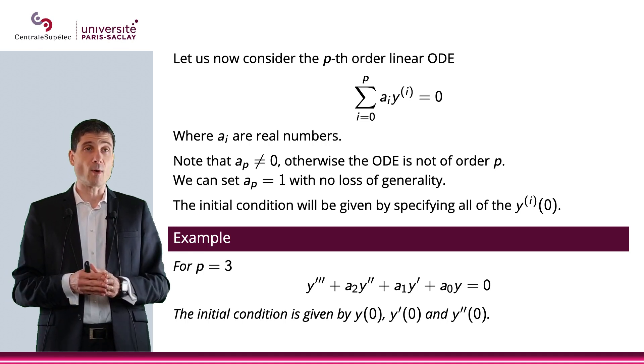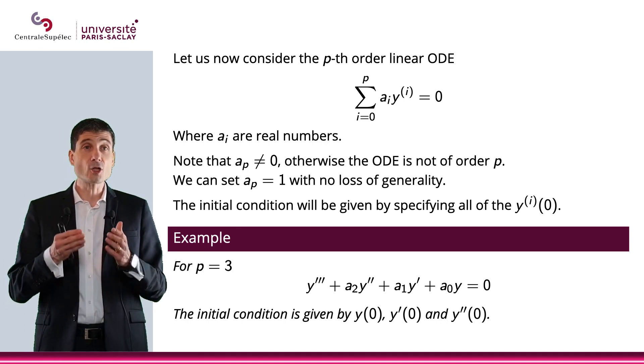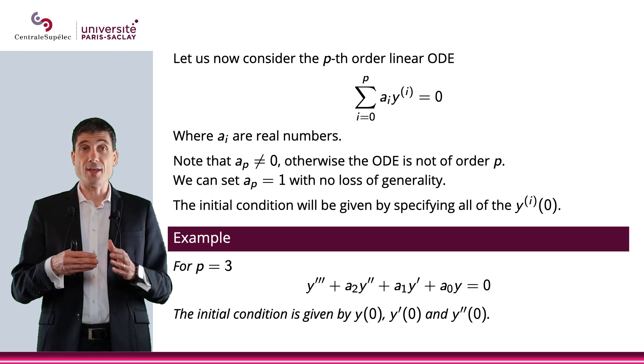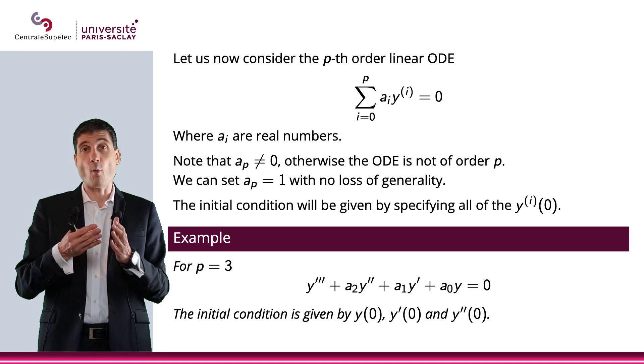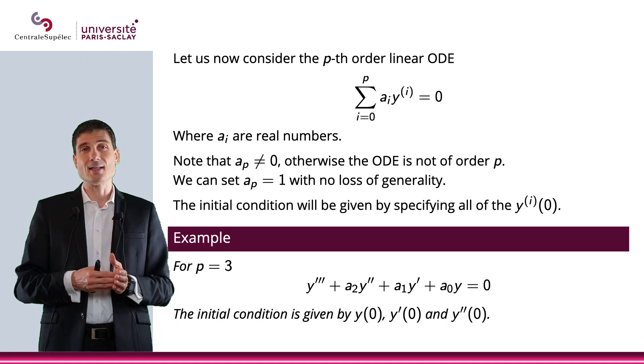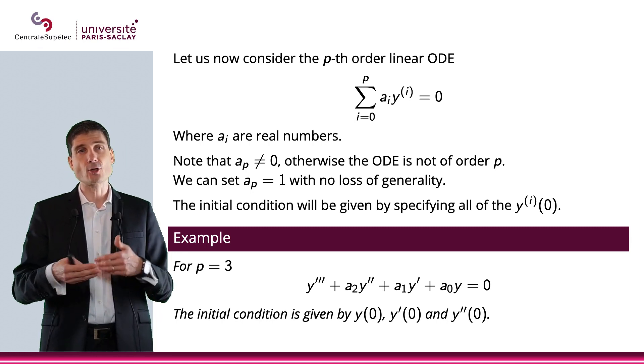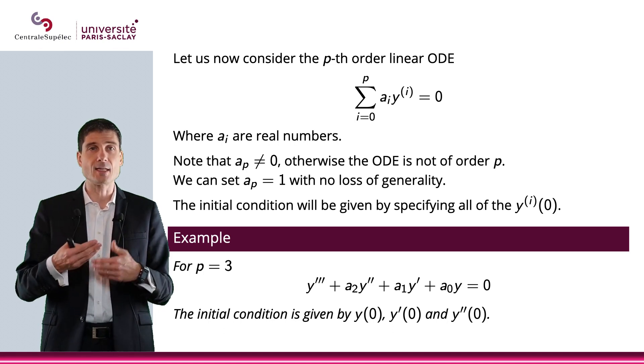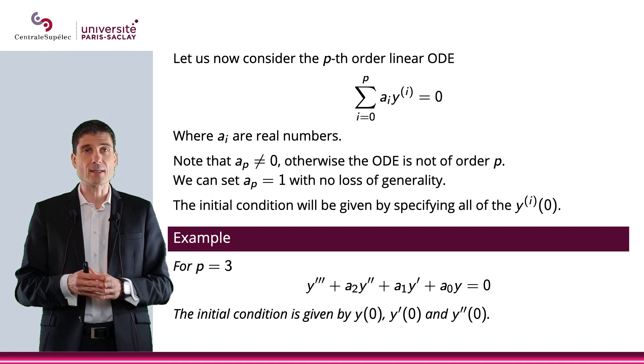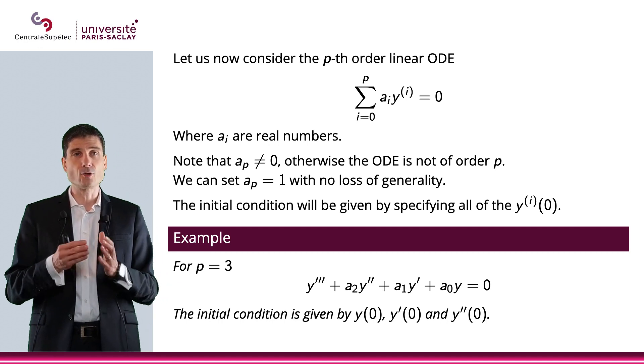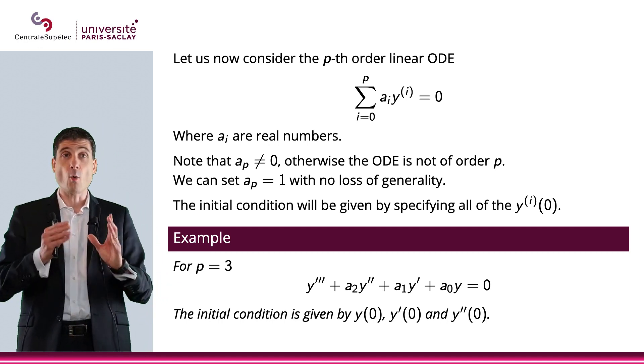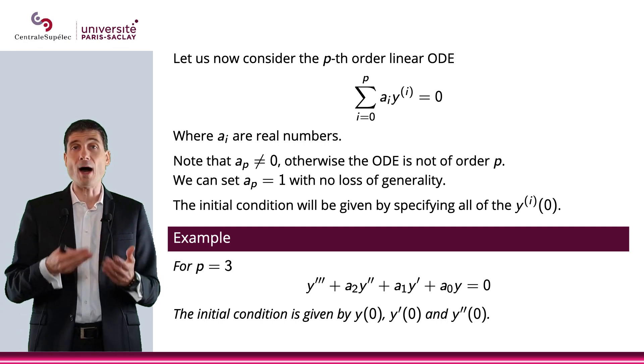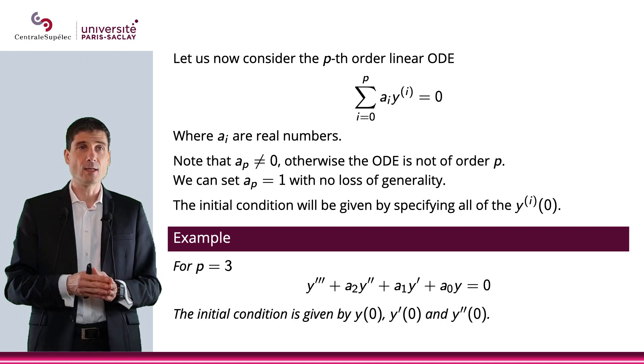Now the initial condition will be specified by the value of y^(i) at 0, and I could actually specify them at any point, but 0 could also be t_0. Just to simplify things, I will consider t_0 to be equal to 0. And again, y^(i) is going to be simply y(0) if i is equal to 0.